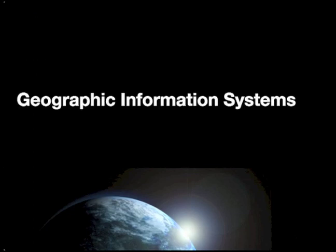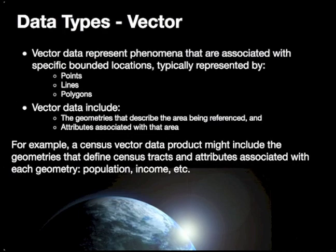Starting with vector data types, which represent phenomena that have specifically bounded locations and are typically represented by three primary geometry types: points, lines, or polygons. Vector data typically include the geometries associated with features in a dataset and also the attributes associated with each one of those features.